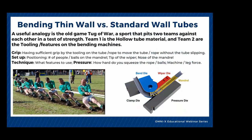Bending thin wall versus standard wall tubes. A useful analogy is the old game tug-of-war, a sport that pits two teams against each other in a test of strength. Team one is the hollow tube material, and team two are the tool features on the bending machines. Grip is common — you need sufficient grip by the tools on the tube, much like you need sufficient grip on the rope to keep things from slipping. Setup is the positioning of the people, which is equivalent to the balls on the mandrel, the tip of the wiper, and the nose of the mandrel.